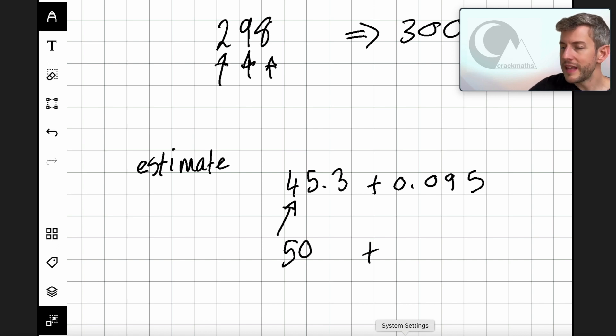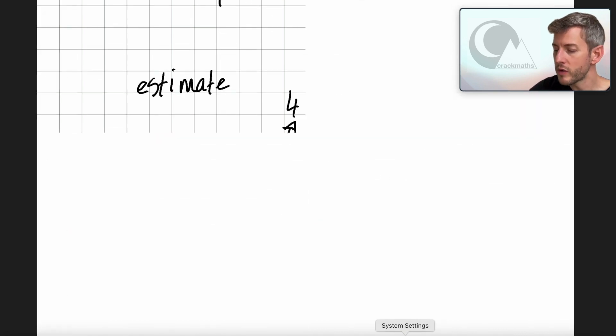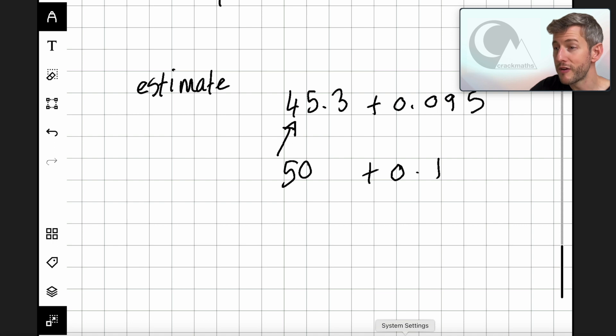Now let's have a look at this. The first significant figure in this number is the 9. After it, we have a 5. So 5 or above, we give it a shove. So that means that this 9 is going to become a 10. So let's look at what that looks like. So that will be plus 0.1. So if we want to estimate 45.3 plus 0.095, that's going to equal 50.1.